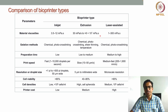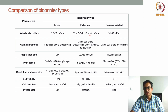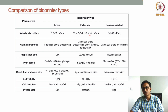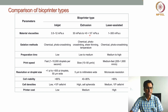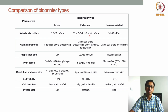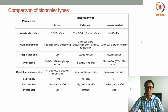Coming to extrusion-based bioprinters, low to moderate, even high viscous materials can be used — starting from very low to high viscous materials — because here the principle is we put the material into the syringe and apply pressure, either pneumatic or mechanical, to extrude the material. So this printer is capable of extruding materials of different viscosities, from about 30 mPas to almost 10^7 mPas.